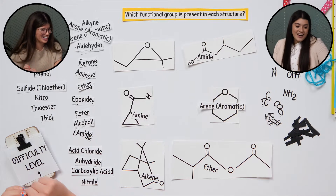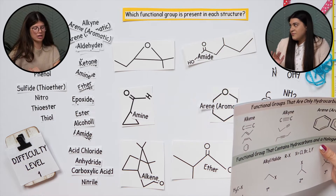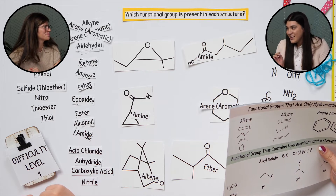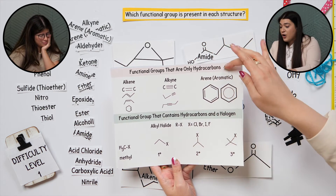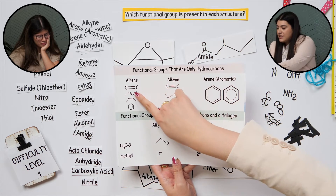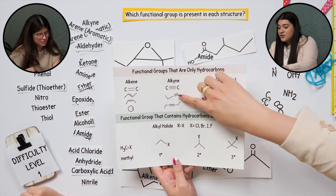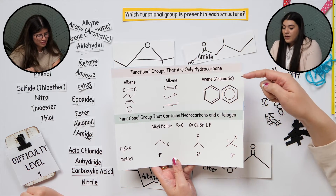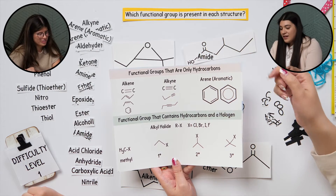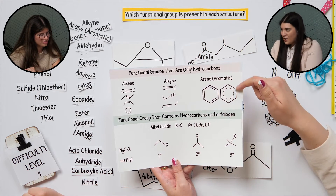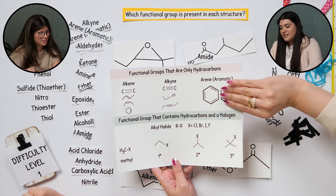Let's review this. Now let's go back to each type — I've added a few just in case you see them, because all professors are different and some like to throw curveballs. The first ones we saw were anything that was only a hydrocarbon — just hydrogens and carbons. Alkene means a double bond between carbons, no oxygens or nitrogens. Alkyne is a triple bond. And an arene or aromatic ring is a benzene ring, with three double bonds in that cyclic ring.